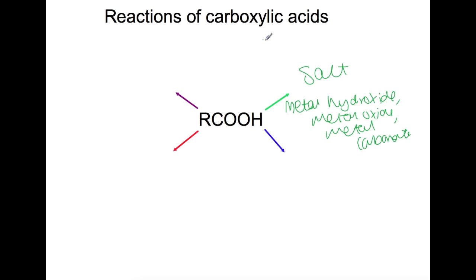So for example, if we had ethanoic acid and we reacted that with sodium hydroxide, then you would produce sodium ethanoate.